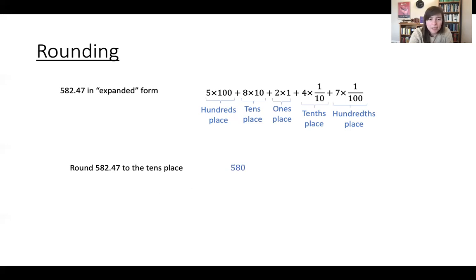But if the digit to the right is five through nine, then you would make the tens place, you would add one to the tens place and make everything to the right zero.